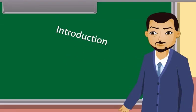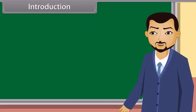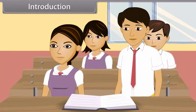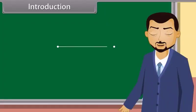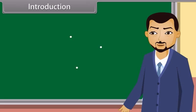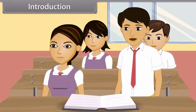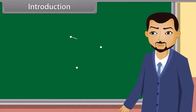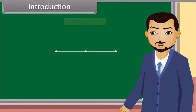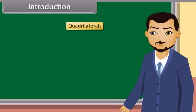Introduction: Students, can you tell what we get when we join two points? A line. Yes, we get a line when we join two points. And what do we get when we join three points? A triangle. Yes, we get a triangle. We also get collinear points. Today we'll study about quadrilaterals. A quadrilateral is formed when we join four points.